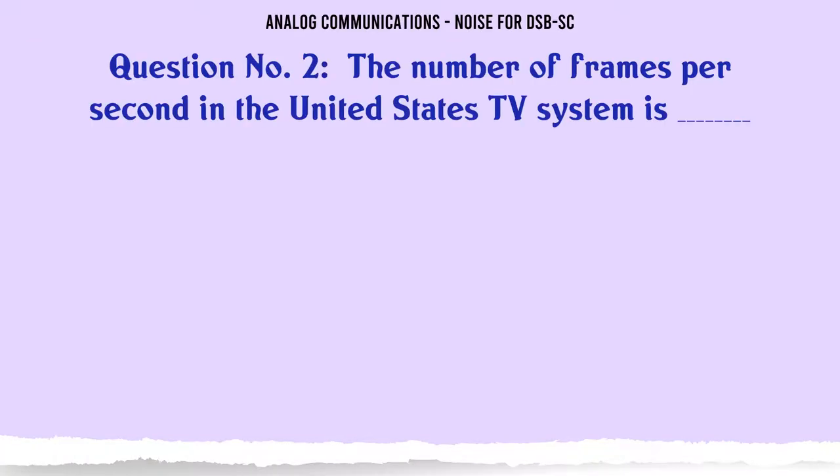The number of frames per second in the United States TV system is: Option A: 262.5. Option B: 525. Option C: 45. Option D: 30. The correct answer is 30.